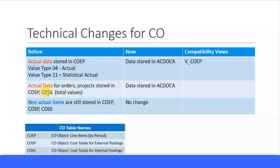Actual data for orders and projects which used to be stored in COSP and COSS will now be stored in the ACDOCA table. Non-actual items — all the statistical items — will still be stored in the COEP, COSP, and COSS tables. There is no change; they will not be moved to the ACDOCA table.